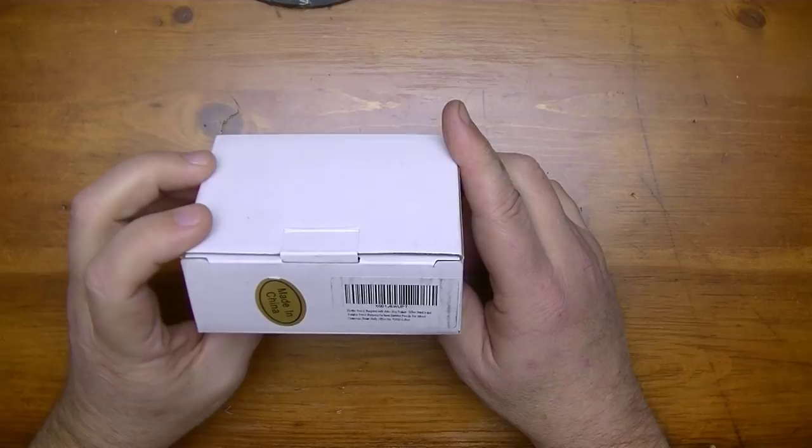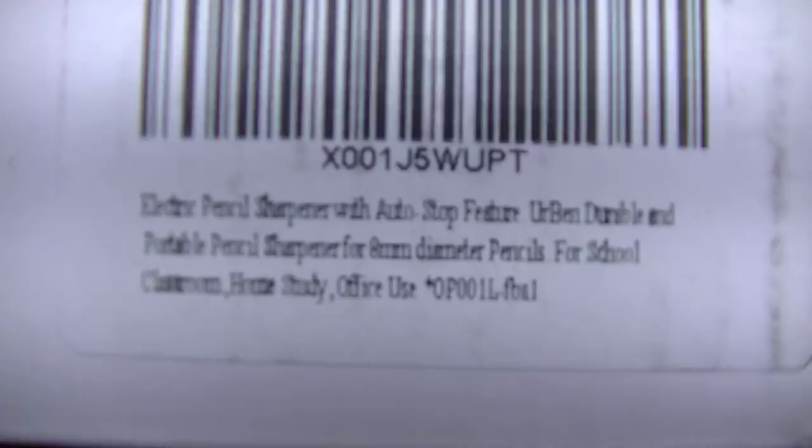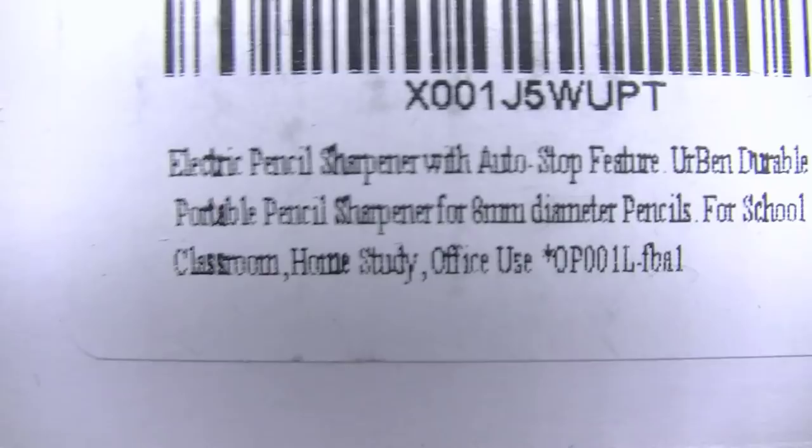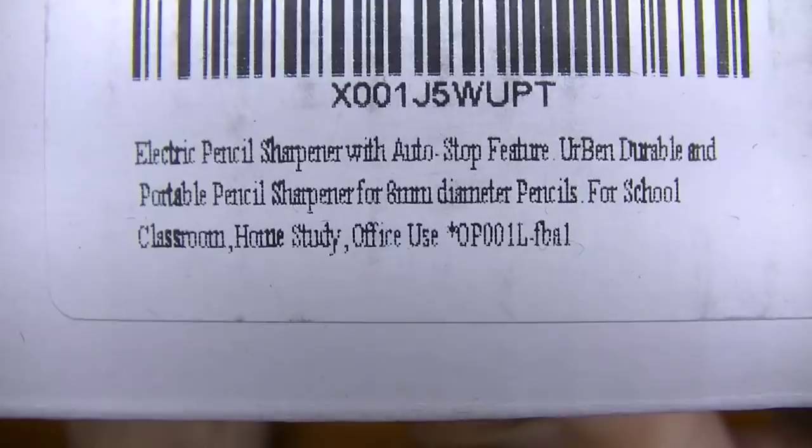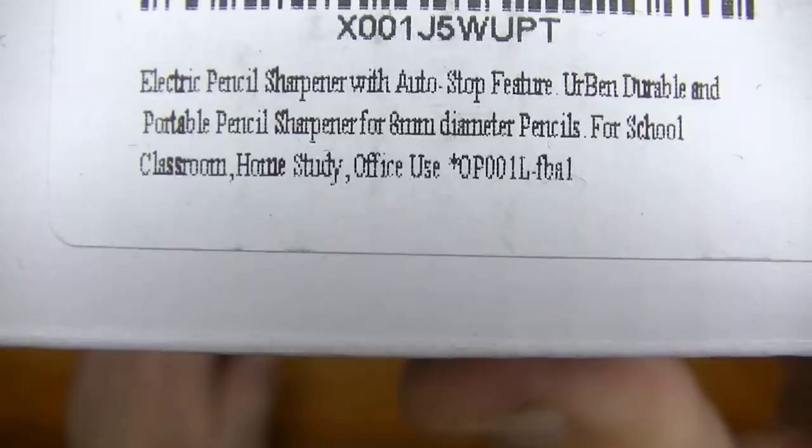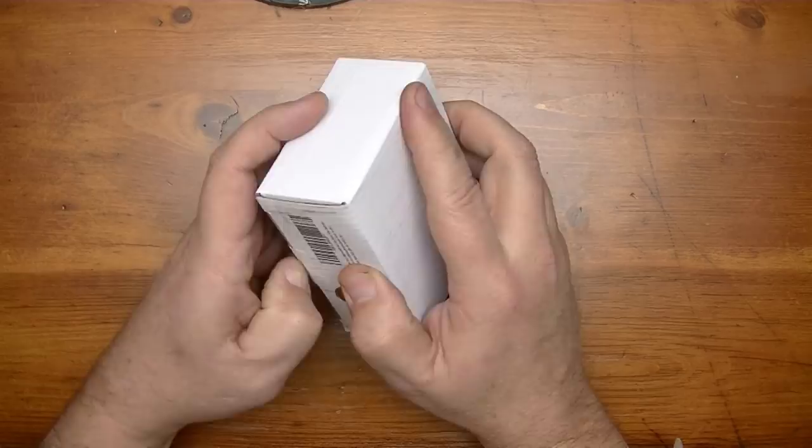Okay, let's check out what's in this box first. It says it's an electric pencil sharpener with auto-stop feature. Urban, durable, and portable pencil sharpener for 8-millimeter diameter pencils for school, classroom, home, study, office use. Made in China. Let's see what it's all about.